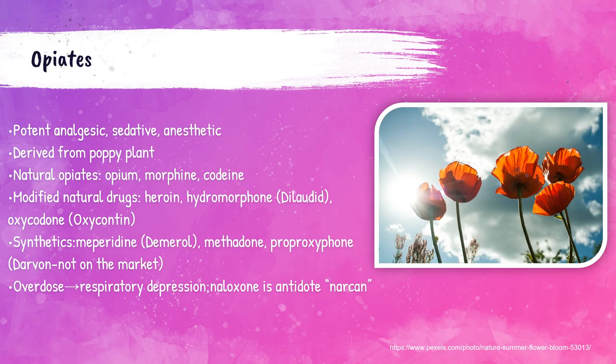Opiates are drugs derived from the poppy plant. They are used as sedatives, anesthetics, and pain relievers. Naturally derived opiates include opium, morphine, and codeine. Heroin, Dilaudid, and OxyContin are modified natural opiates. Overdoses of opiates cause depression of the respiratory system. There is actually an antidote for opiate overdoses called naloxone, or Narcan, which is given usually nasally as a spray.